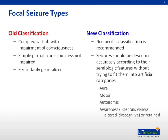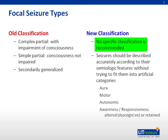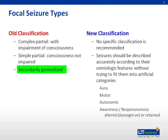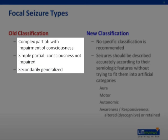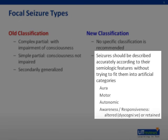Under the older classification, there was differentiation between seizures where consciousness was impaired versus those where it was not. There is no such differentiation with the new classification. Focal seizures may spread to involve the contralateral hemisphere. Under the old classification, these were referred to as secondarily generalized seizures. The classification into simple partial, complex partial, and secondarily generalized seizures is thought to be artificial and arbitrary. Under the new classification, focal seizures are described according to their observable motor and autonomic manifestations.